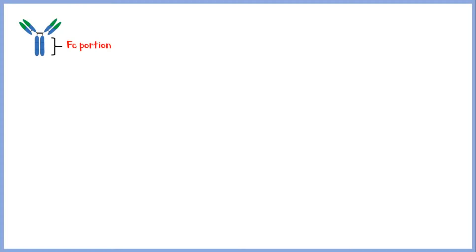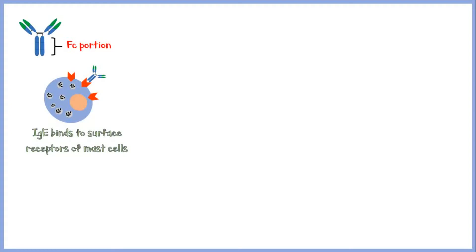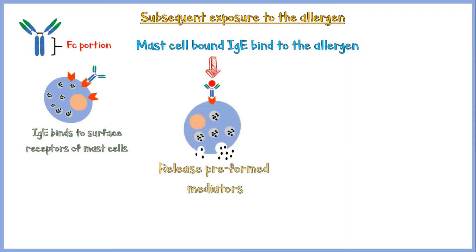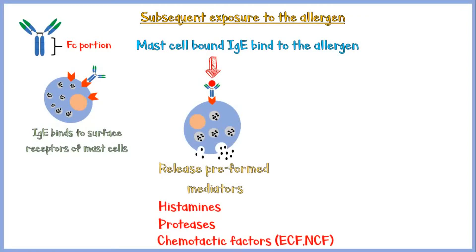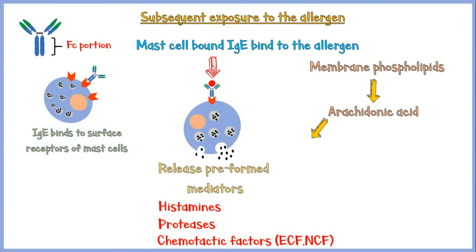IgE antibodies have a region called the Fc portion, which acts as a ligand to bind onto surface receptors on mast cells. These IgE-bound mast cells reside within the submucosa of the respiratory tract. With subsequent exposure to the allergen, the mast cell-bound IgE will bind to those allergens, activating intracellular signaling pathways and triggering release of preformed mediators — histamine, proteases, and chemotactic factors like eosinophil and neutrophil chemotactic factor — into the submucosa. Allergen binding to IgE also increases production of arachidonic acid from membrane phospholipids, which is then converted into prostaglandin D2 and leukotriene B4, C4, and D4.